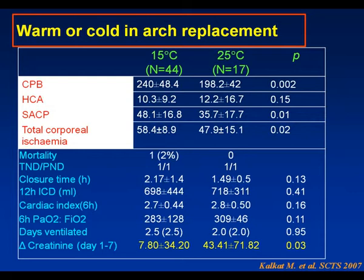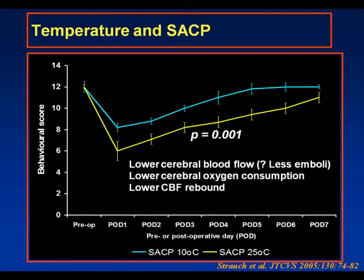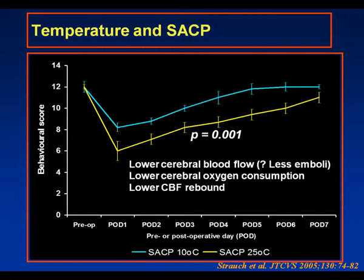Experimentally, the perfusate temperature of the SACP may also be important. Behavioral score data from a porcine model from Dr. Grip's group showed that lower SACP temperature at 10 degrees centigrade was associated with better behavioral scores. They wondered whether this related to lower cerebral blood flow and fewer emboli — though the Hanover group have shown clinically that SACP is associated with very few cerebral emboli — or to reduced cerebral oxygen consumption during the arrest period, less metabolic demand, and less potential for ischemic injury, and a lower cerebral blood flow rebound after restoration of corporeal flow.